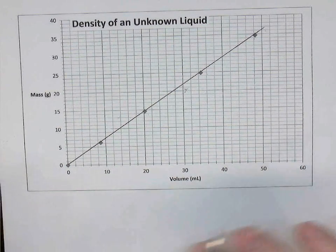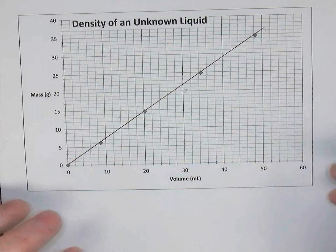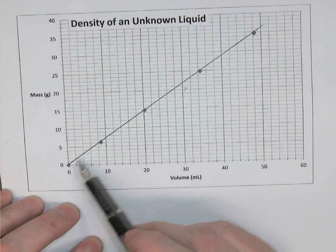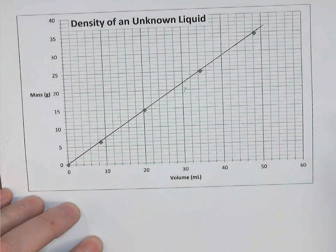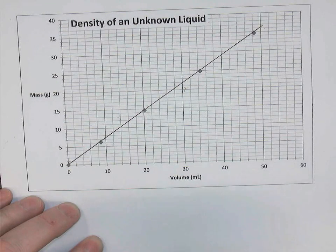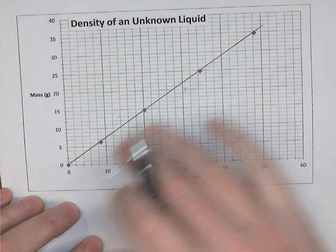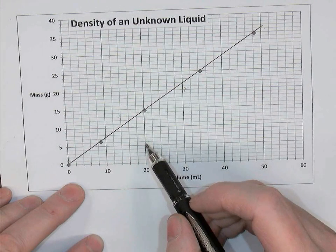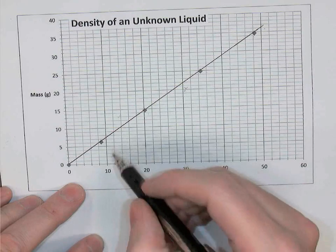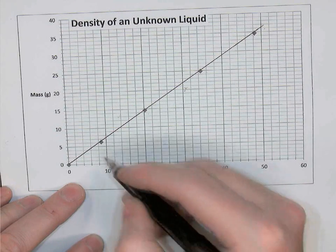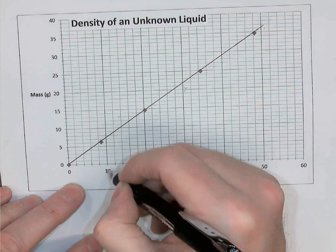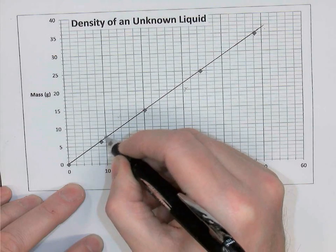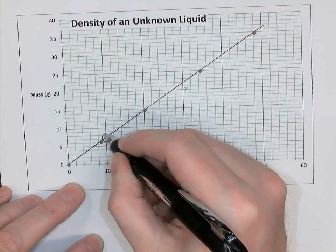So now that I've got the line drawn, I'm going to ignore the data points. So I'm no longer going to consider the five points. Instead, I'm going to take two points that I myself am going to put on that line. What I like to do is find some points that are easy to read the coordinates of. For example, 10 milliliters, if I use that as an x value, I'll just go up and I'll put a dot right there on the line and I'll circle it.